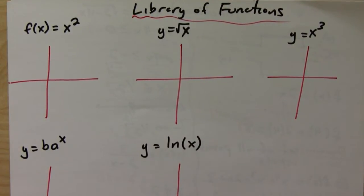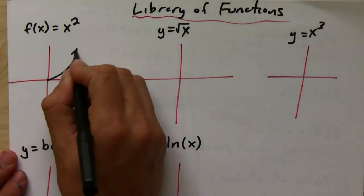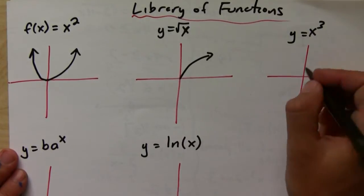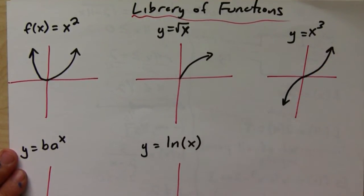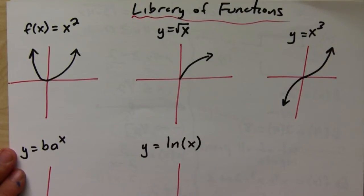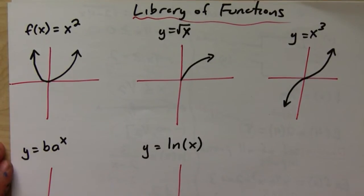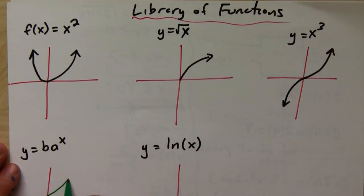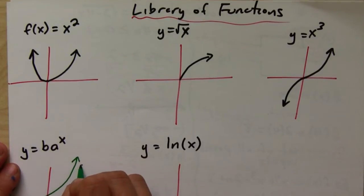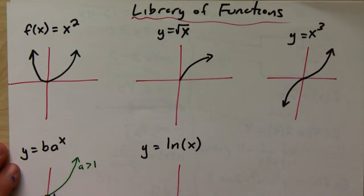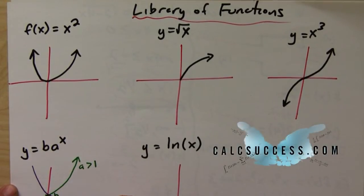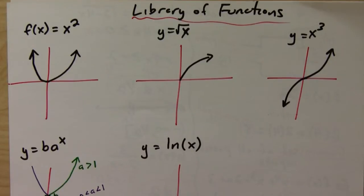X squared is just your basic parabola. Square root of X looks like a shooting rocket. X cubed looks kind of like an S shape. The exponential function: it's increasing if A is greater than one, and the Y-intercept is at B. But it's decreasing if A is between zero and one. It has a horizontal asymptote on both.